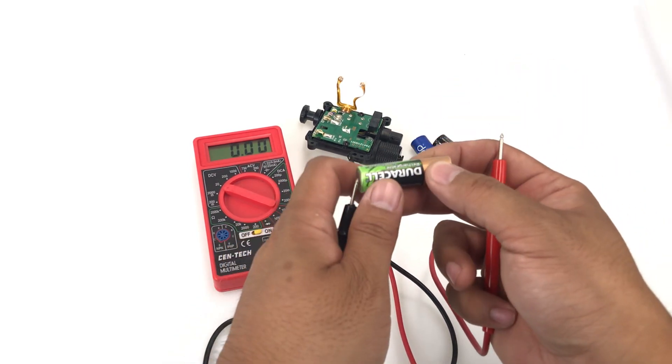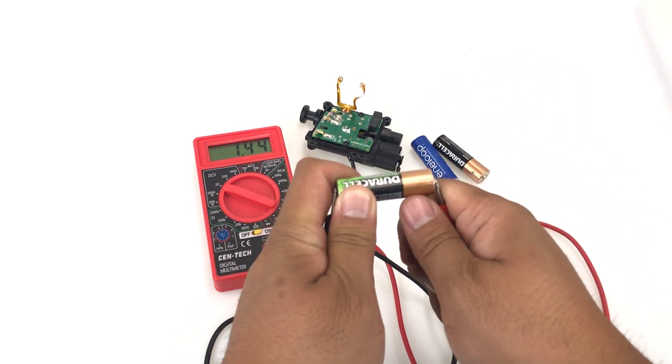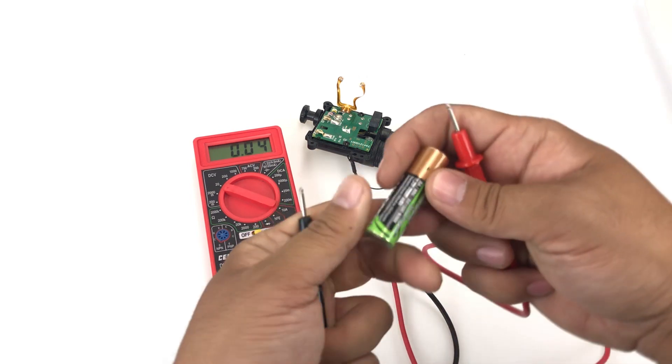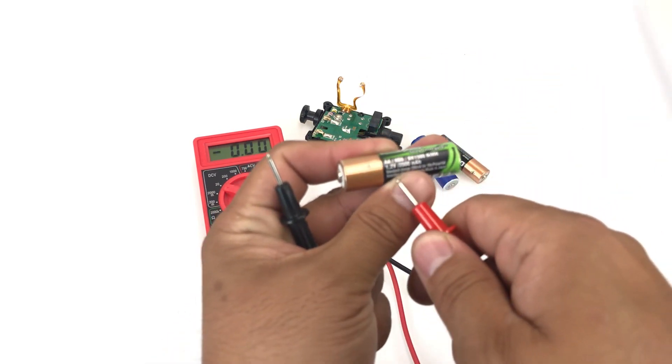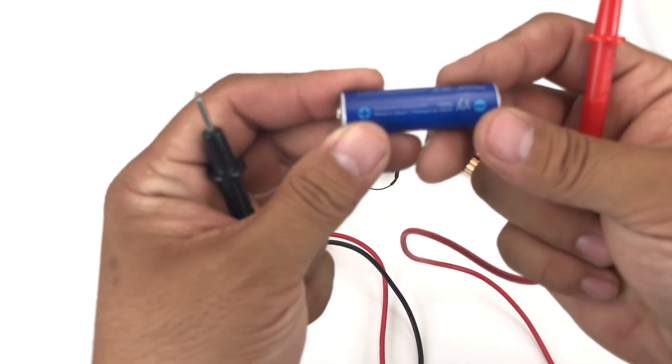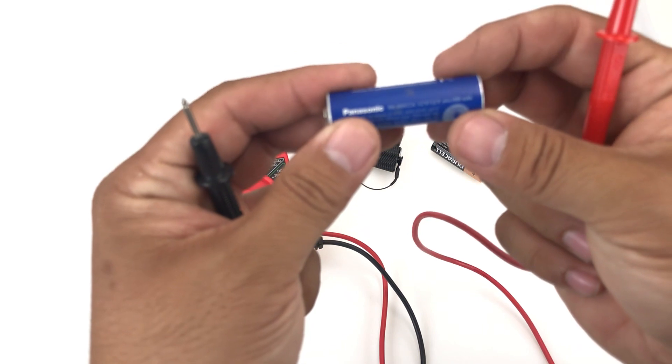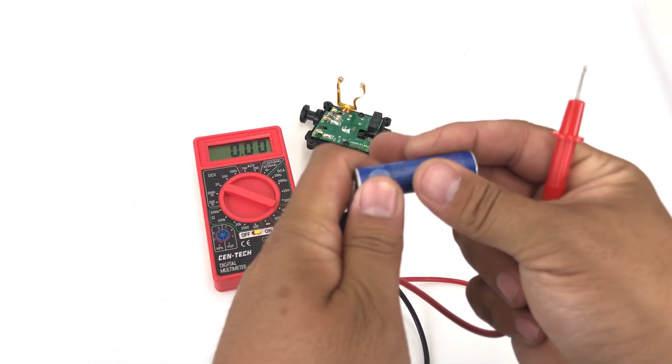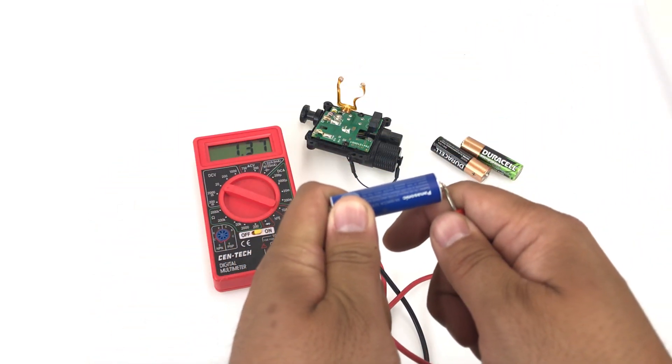This is a freshly charged Duracell rechargeable. 1.4, a little bit higher than it says it's rated for 1.2. And an Eneloop, which is also 1.2 volts, but according to this meter it's 1.37.